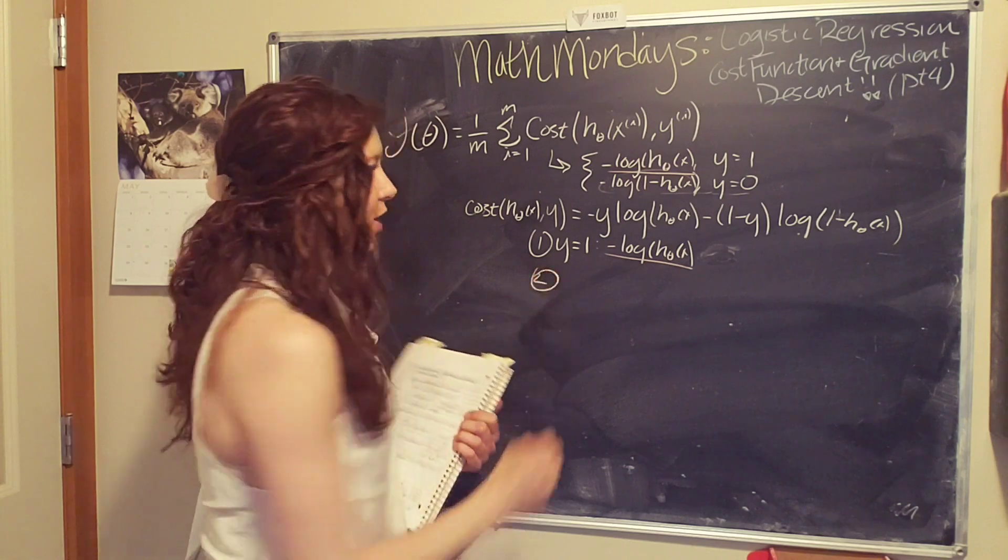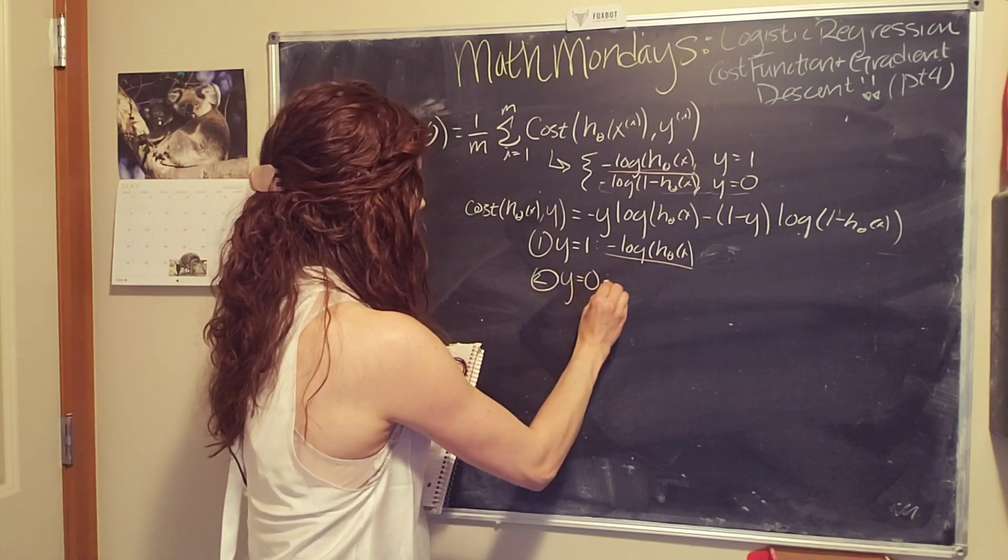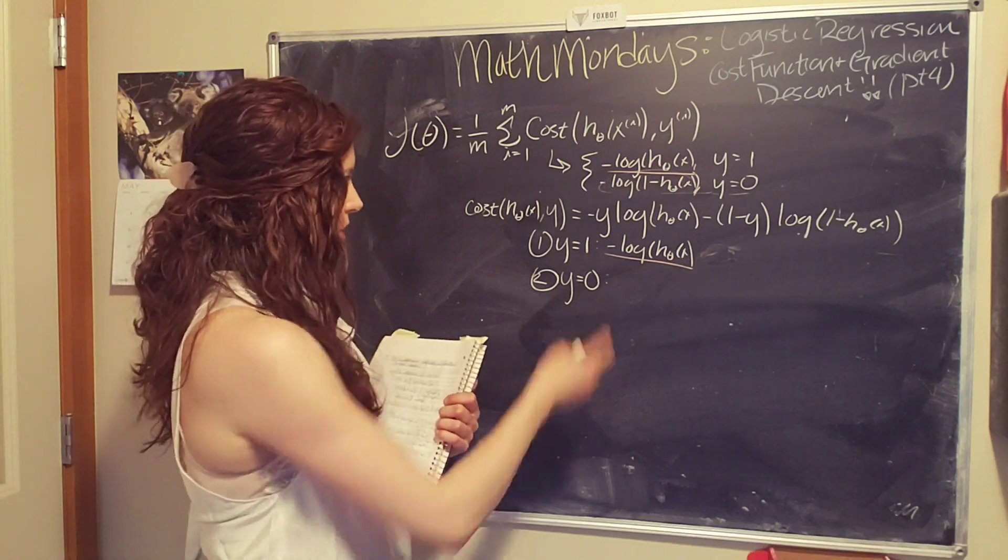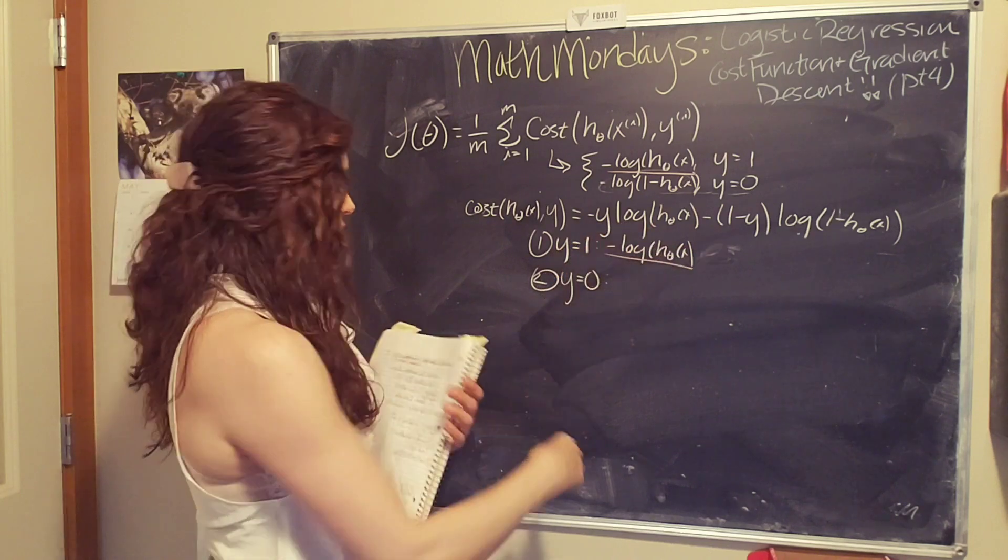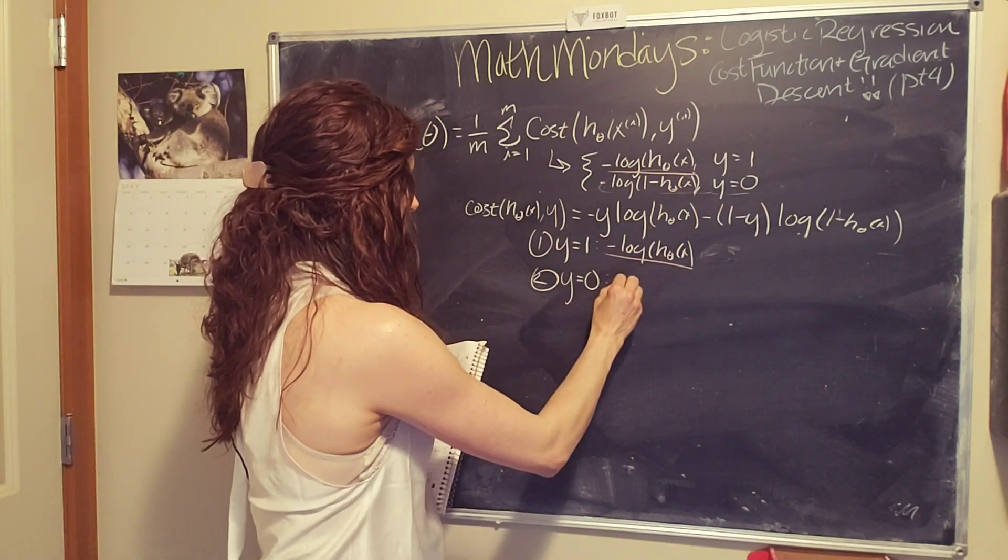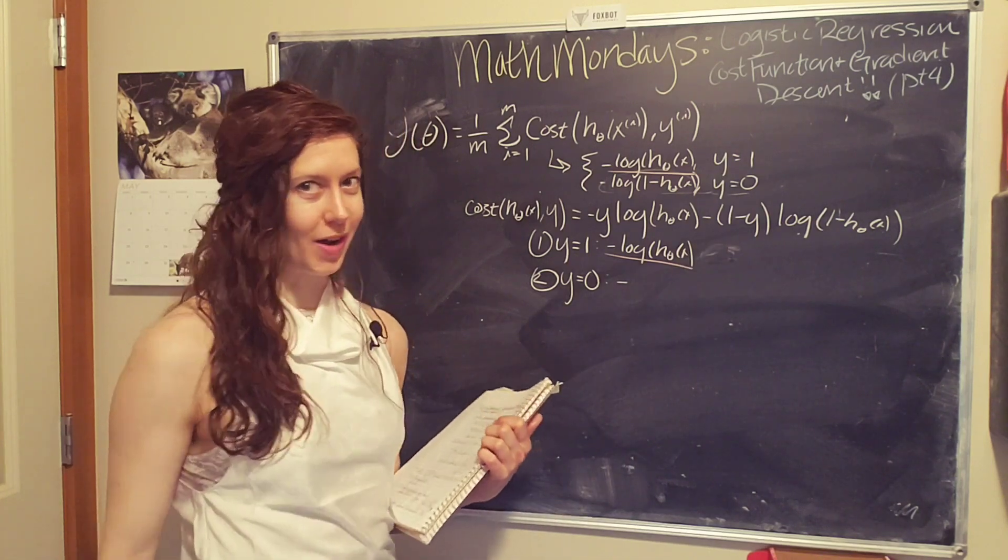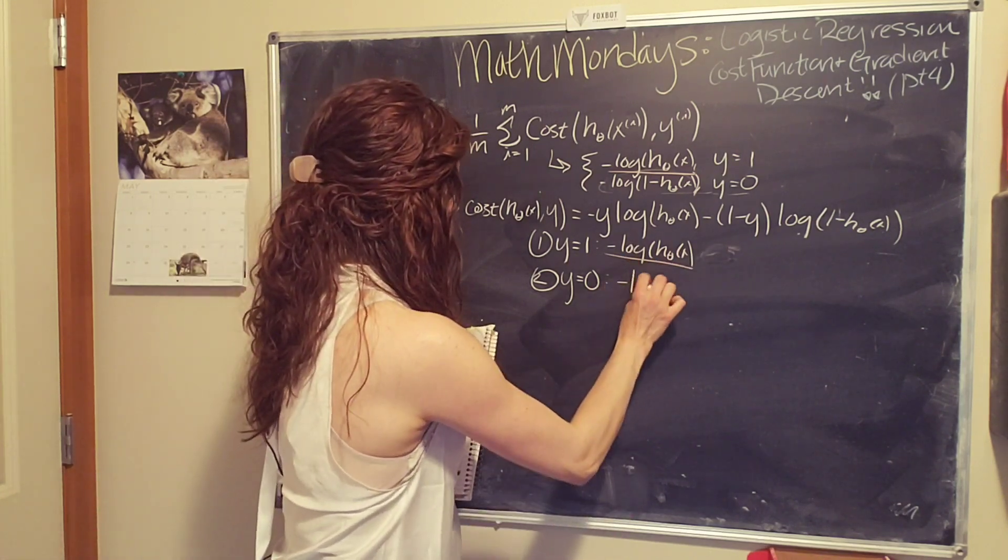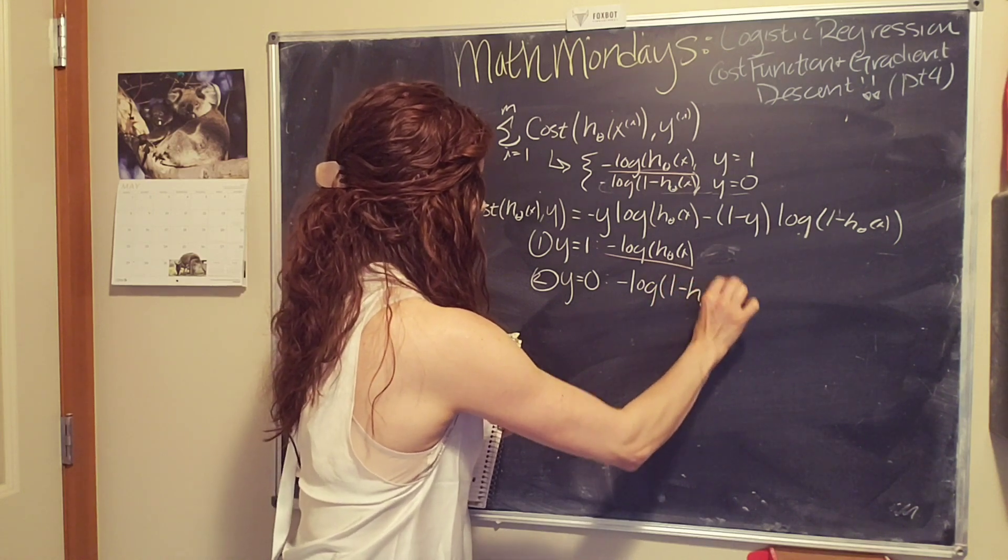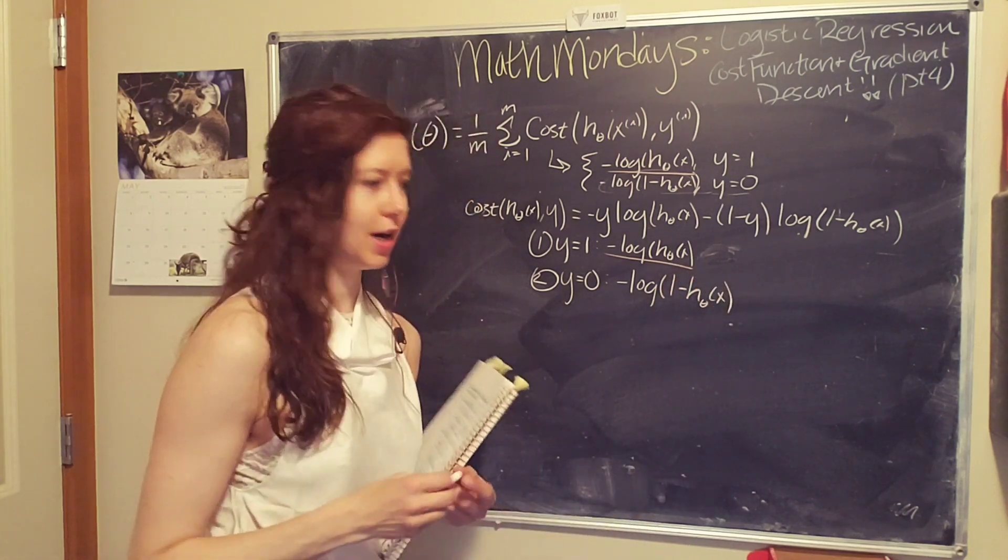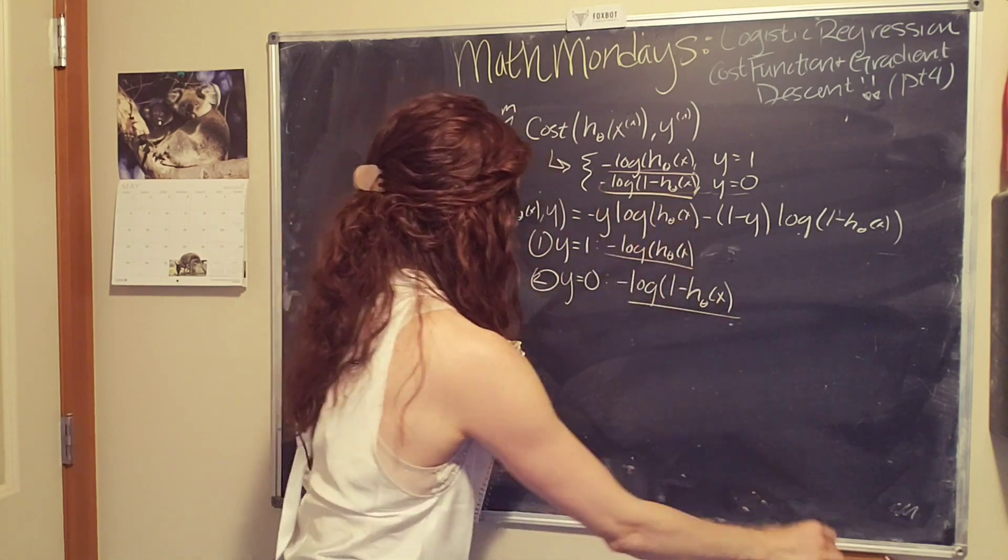Okay, but we got to check our second case for y equals zero. Okay, y equals zero. So we plug in y equals zero. The first term goes away, because zero times log is just zero, and we end up with negative one minus zero. One minus zero is one, so we end up with a negative one. So negative log of one minus h theta of x. Yes! So that's the same. We're going to use yellow this time. Wow, it's the same!